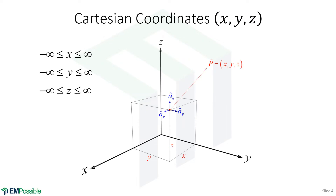Cartesian coordinates — this is XYZ. This is probably what you've done 90% of the time throughout high school and your earlier courses, and it's very intuitive. We are locating a point somewhere in space with the coordinates XYZ, and we can put these together and write it as a vector in Cartesian coordinates. The X value is the distance in the X direction to locate that point, the Y value is the distance along the Y axis from the origin, and Z is likewise the distance off of the origin. We add those three lengths together, taking into account their directions, to locate that point.